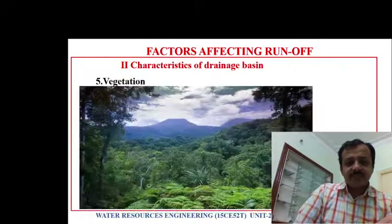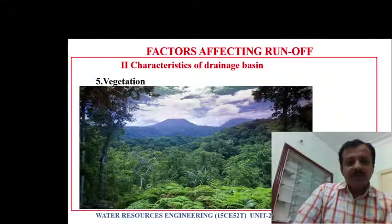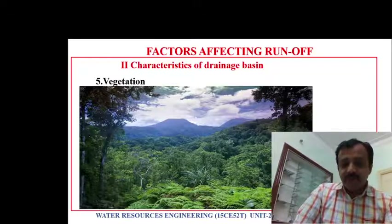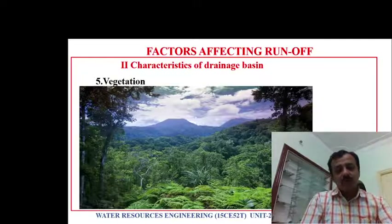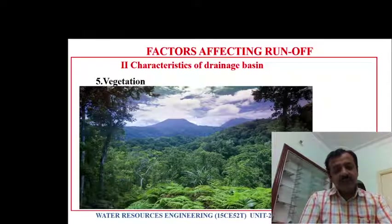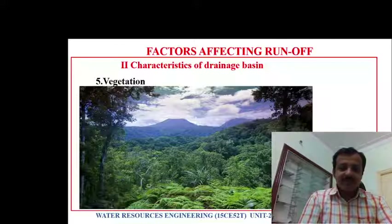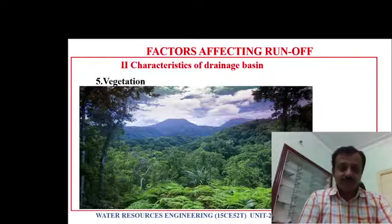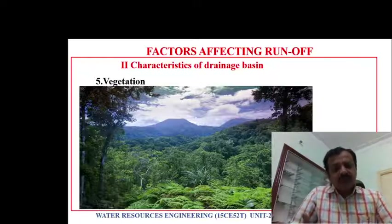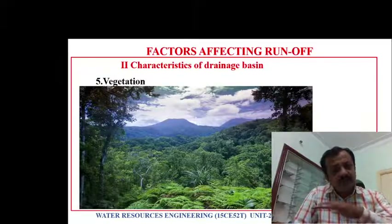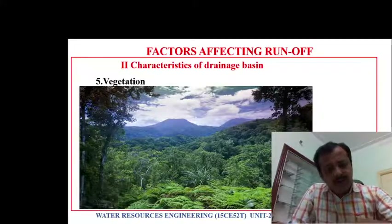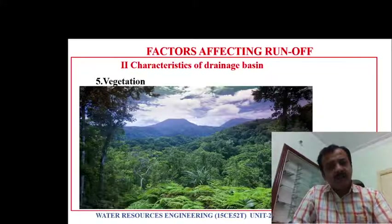Vegetation also plays a very important role. If there is more vegetation in the catchment, infiltration will be more — water gets infiltrated into the soil and plants absorb the rainwater, hence runoff will be less. If you have dense vegetation, lesser will be the runoff. If you have a plain area without any vegetation, then runoff will be more.